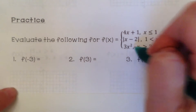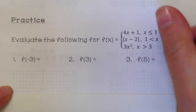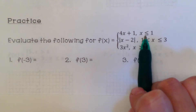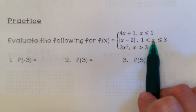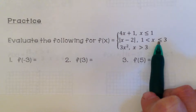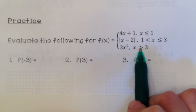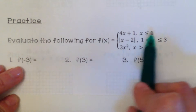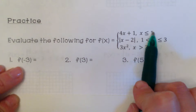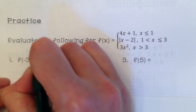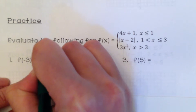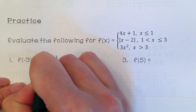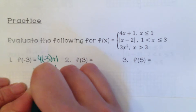You have 3 different options to choose from, so you have to pay attention to the restrictions. The first is for x values less than or equal to 1; the second for x values greater than 1 but less than or equal to 3; the last for x values greater than 3. Negative 3 falls into values less than or equal to 1, so we use the first function: 4 times negative 3 plus 1. 4 times negative 3 is negative 12, plus 1 gives negative 11.